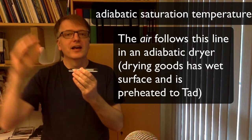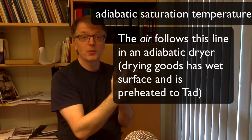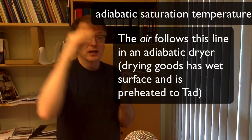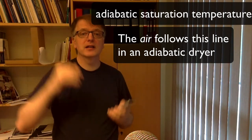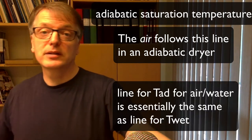You preheat it and then the air in the dryer, as it picks up water from this thing that we dry, it will follow the adiabatic saturation line in the Mollier diagram. And that is essentially the wet temperature line.